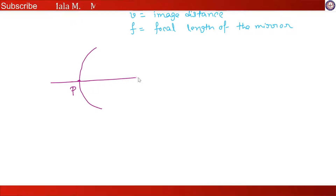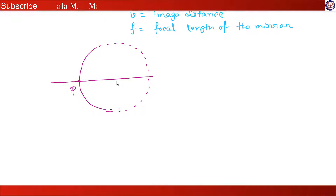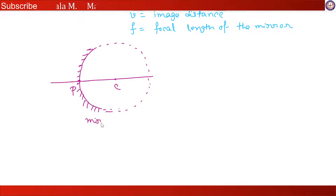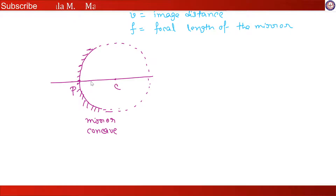You have to draw the principal axis along the middle point and also along the center of that sphere. This is a part of the sphere, and this is the center of the sphere. Focal length is in the case of a concave mirror.